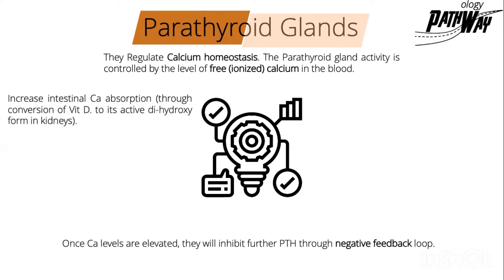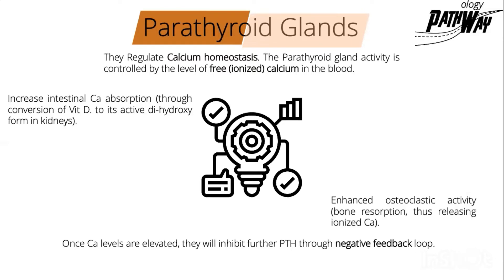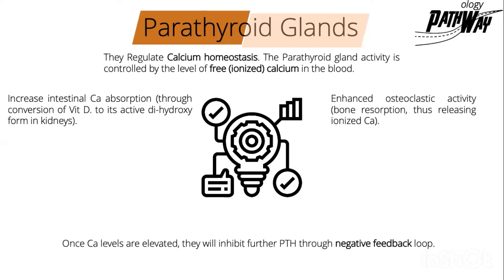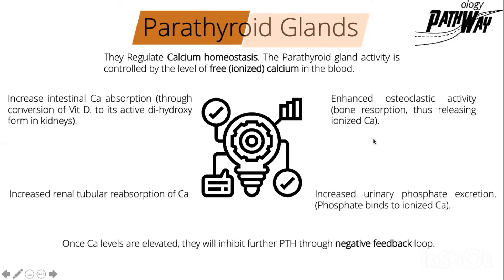How can the parathyroid hormone elevate calcium level in blood? By four mechanisms. First, by increasing intestinal calcium absorption through conversion of vitamin D to its active form in the kidneys. Second, it enhances osteoclastic activity, increasing bone resorption and thus raising ionized calcium. Third, increasing renal tubular reabsorption of calcium. Fourth, increasing urinary phosphate excretion.